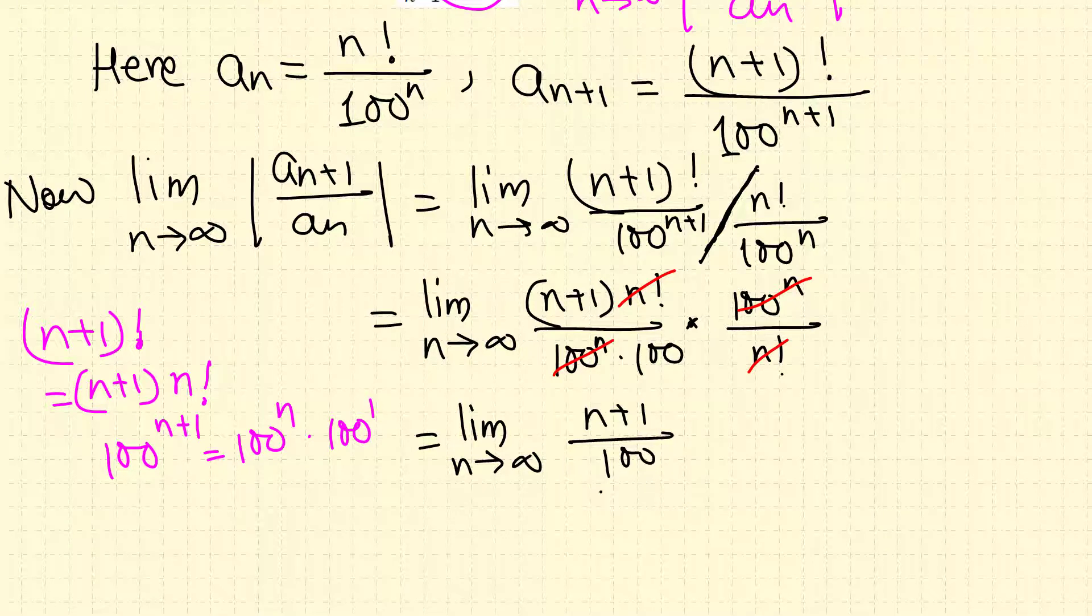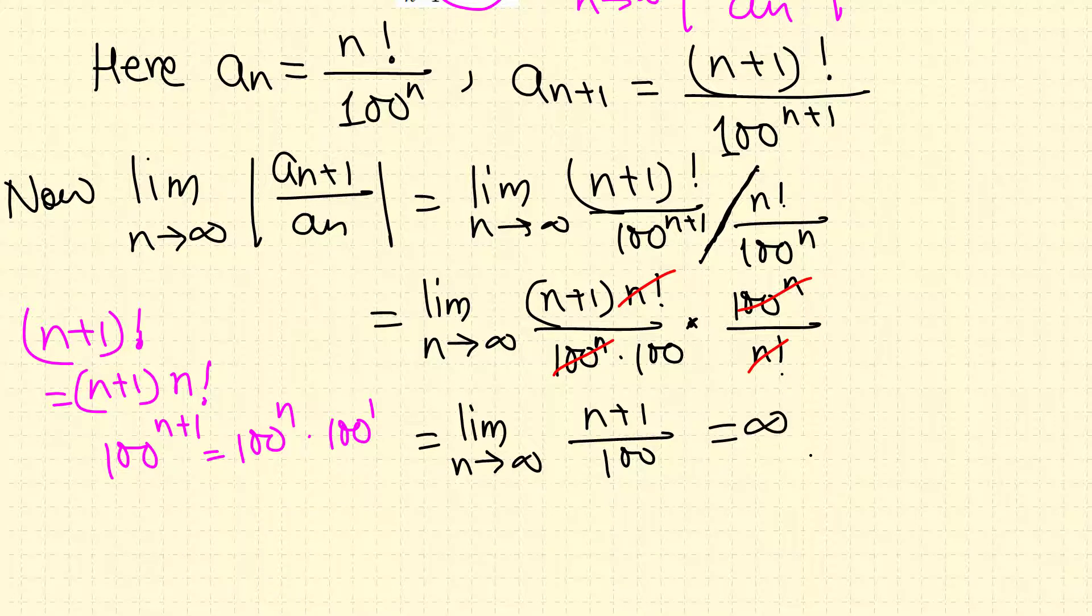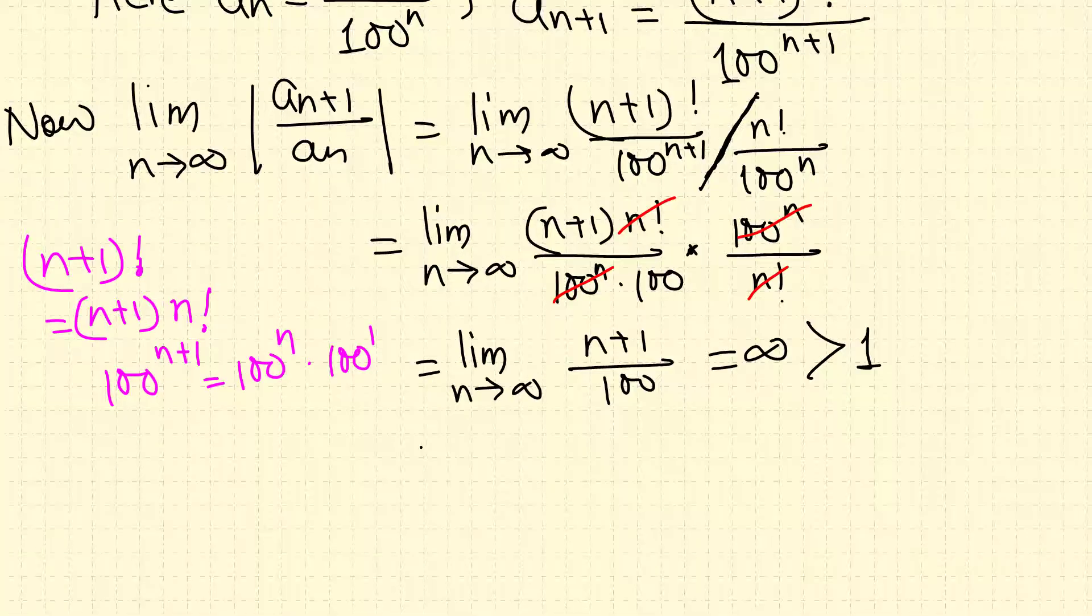When n goes to infinity, the bottom is always 100. This is infinity—very big plus 1, even bigger—divided by a number, which is infinity. This is way bigger than 1, so the series diverges.